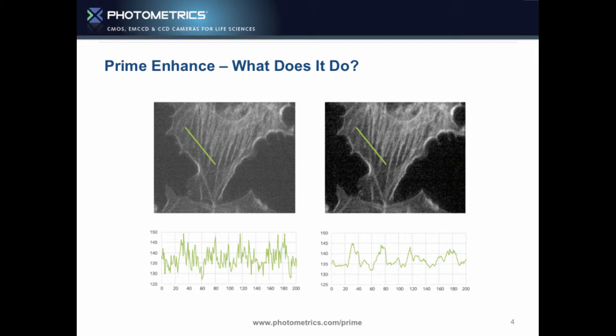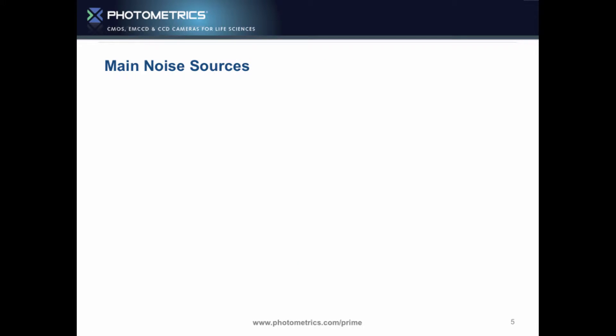So let's look at Prime Enhance. What does it do? Its job is to take an image with high noise and reduce the noise inside it, improving your signal to noise. It's going to give you a better image by turning it on, or it's going to allow you to have less light for the same image quality, and therefore have less light on your cells, less photobleaching, less phototoxicity. Your cells will live for longer. We can also maintain the intensity, so we're not doing any damage to our image.